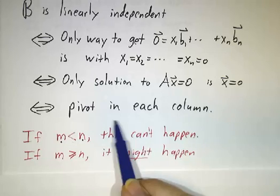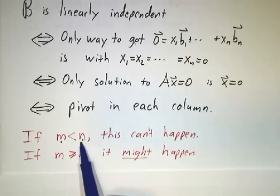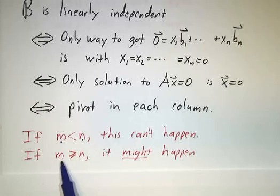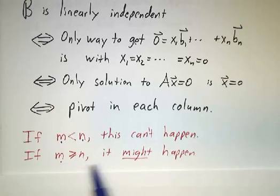You can't have a pivot in each column because you can have at most m pivots and you have n columns. If it's a big enough space, if you have say four vectors in R^5, then it might happen that you have a pivot in each column or it might not. You have more work to do.